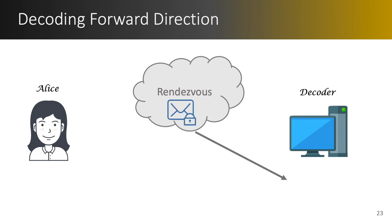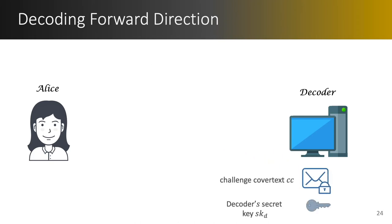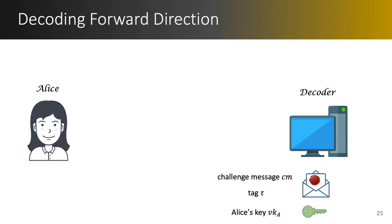In the second algorithm, which is the decoding in the forward direction, the decoder first retrieves the challenge cover text from the rendezvous and using its private secret key it decodes the challenge cover text and reveals the challenge message, the identifying tag, and Alice's public key.